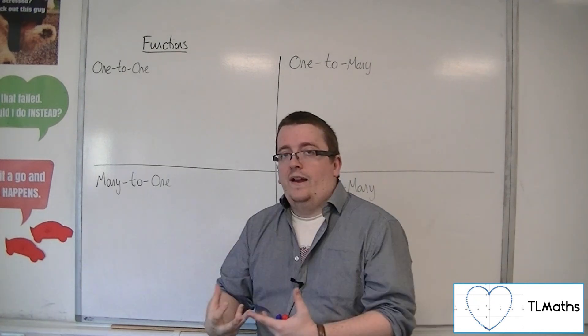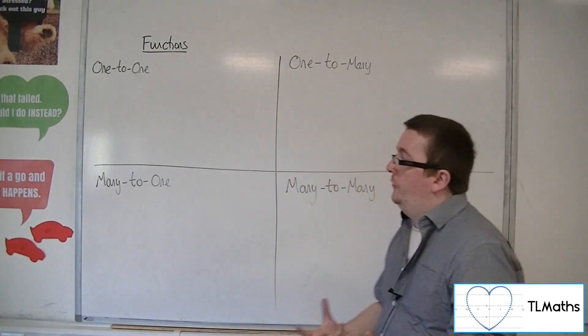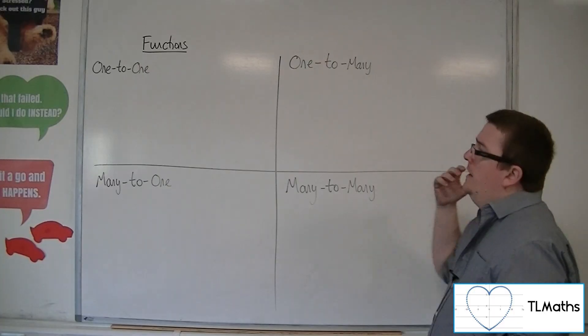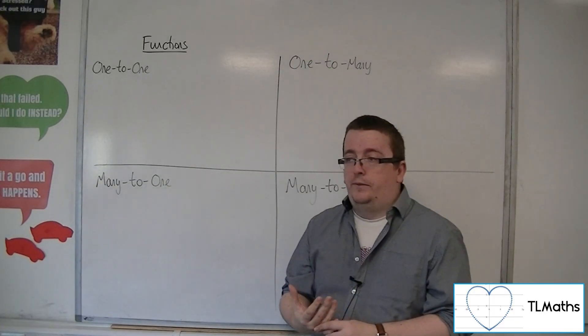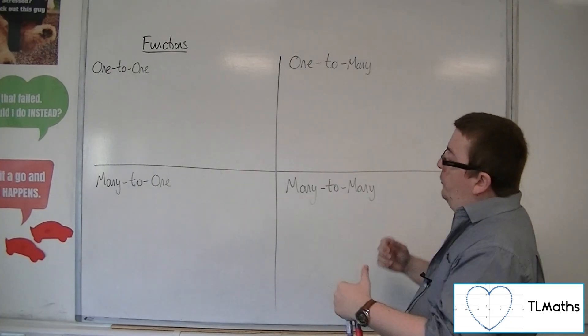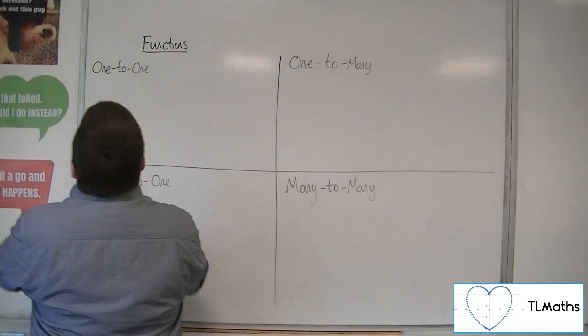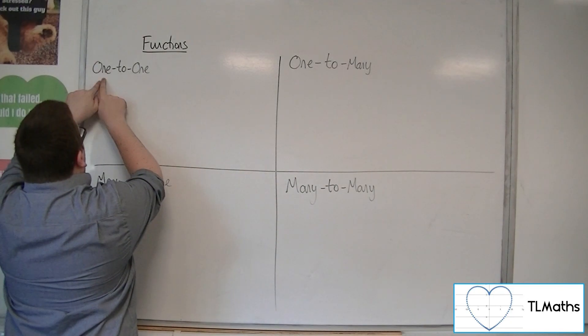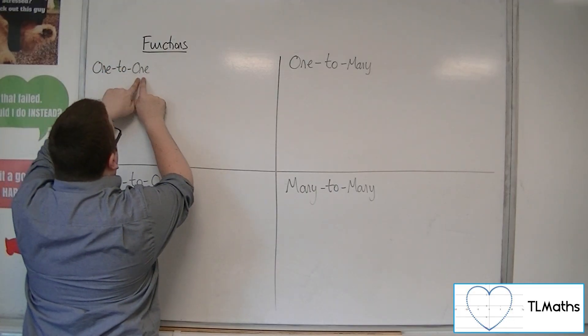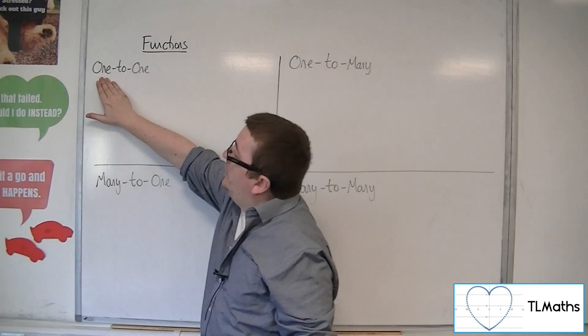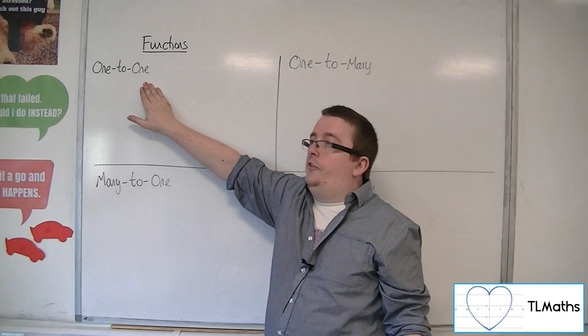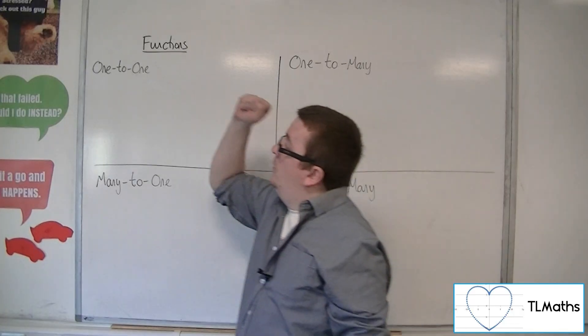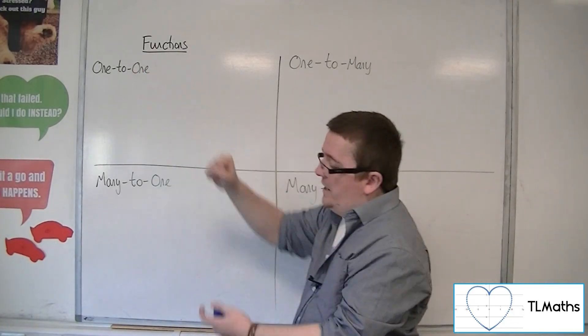Let's first understand what each of these terms means. In all of these cases, the first bit is the x and the second bit is the y. So one-to-one means one x, one value of y. If I substitute in one value of x, I get one value of y.